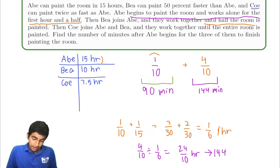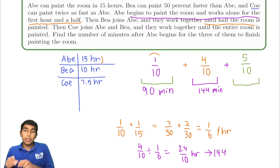Now Coe also joins them, the fastest of all the workers. And then they work together until the entire room is painted, which means that since half the room is already painted, they only need to paint the other half or five tenths of the room. And how long will it take?